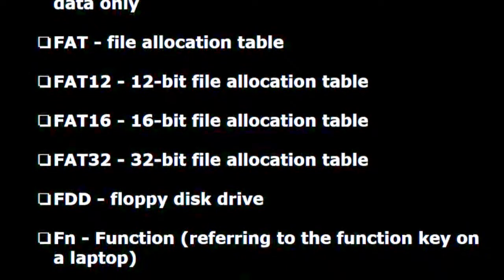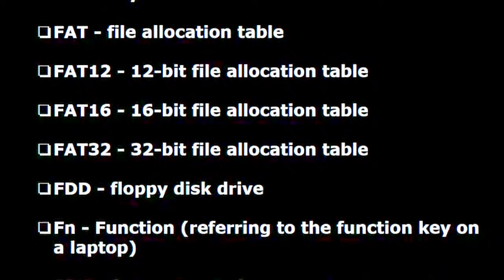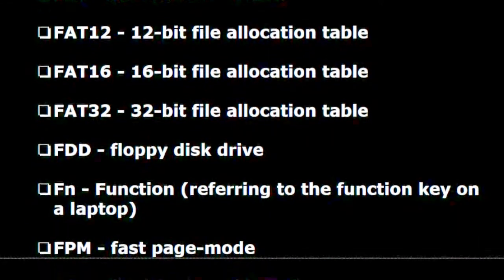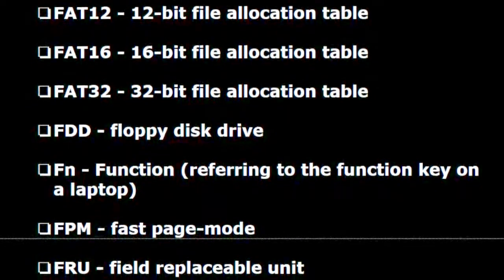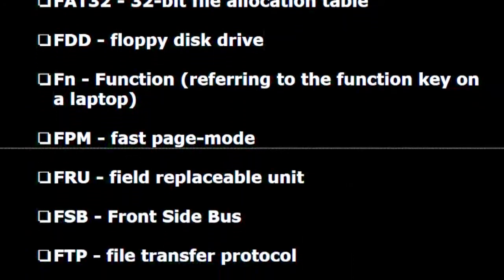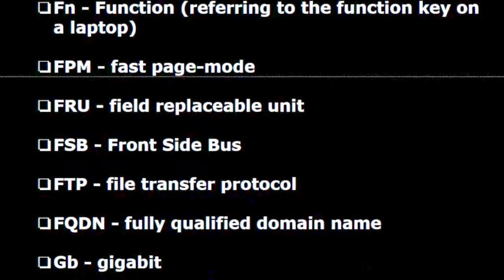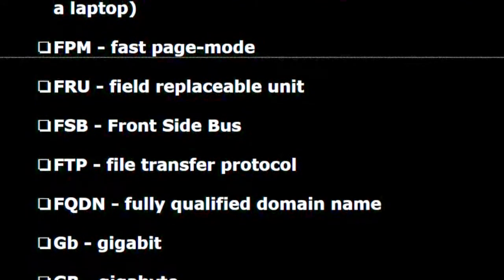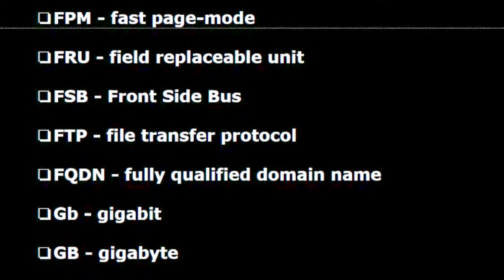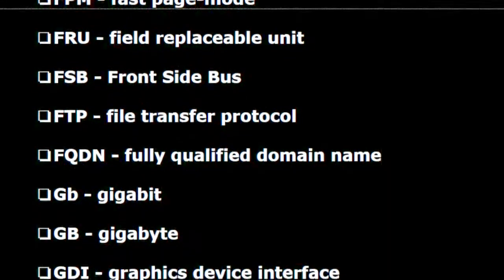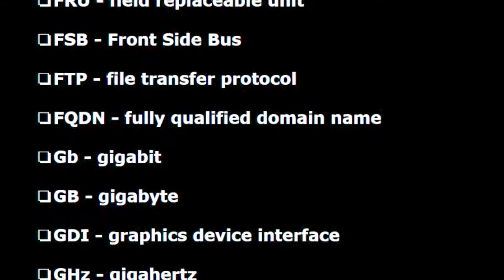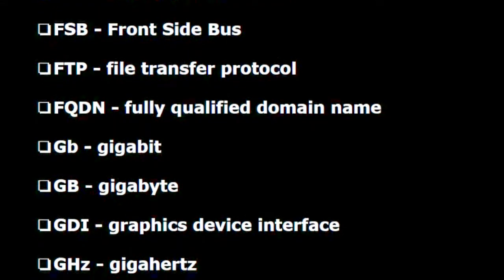FAT16 — 16-bit file allocation table. FAT32 — 32-bit file allocation table. F.D.D. — Floppy disk drive. F.N. — Function, referring to the function key on a laptop. F.P.M. — Fast page mode. F.R.U. — Field replaceable unit. F.S.B. — Front side bus. F.T.P. — File transfer protocol. F.Q.D.N. — Fully qualified domain name. G.B. — Gigabit. G.B. — Gigabyte.